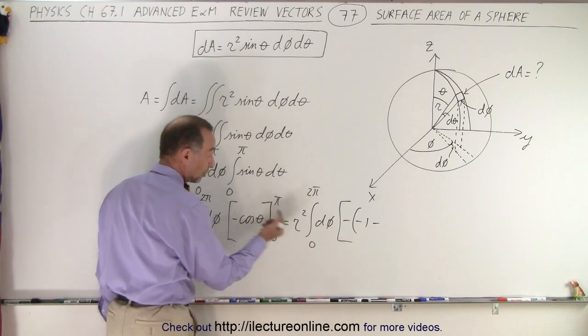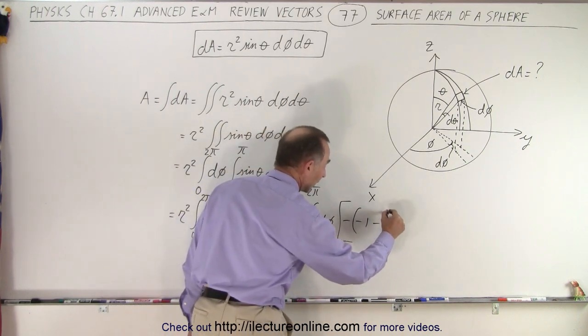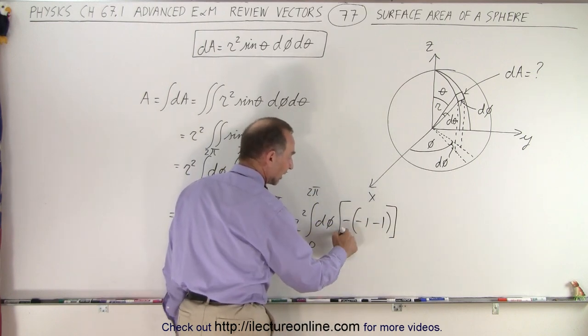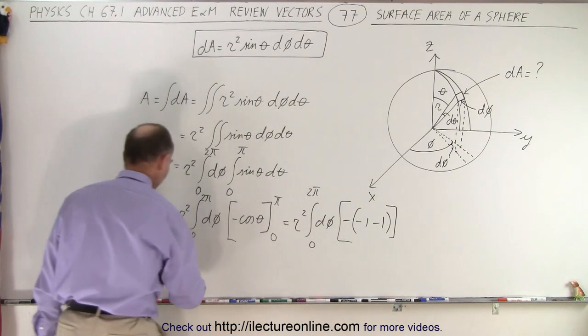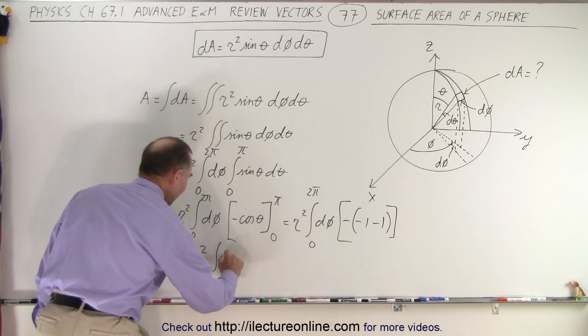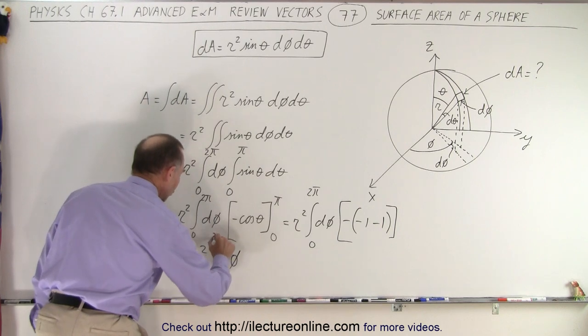So I pulled out the negative. The cosine of π is negative 1, and we subtract from that the cosine of 0. Now the cosine of 0 is 1, but we're subtracting it, so we have negative 1 again. So negative 1 minus negative 1, that's negative 2 times the negative, which is positive 2.